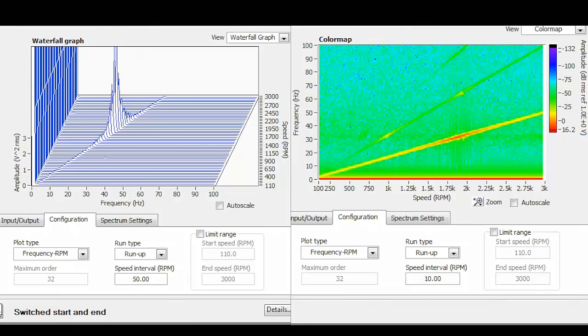In both plots we also observe the order line. The order 1 line is clearly visible for this experiment, which is related to the inherent unbalance of the shaft disc system.